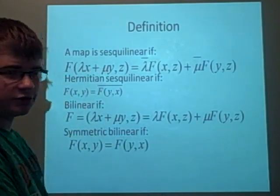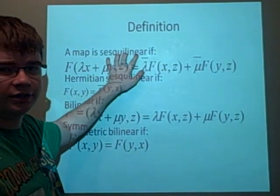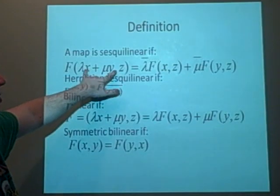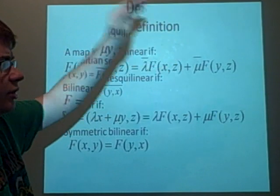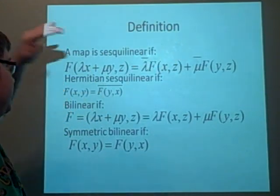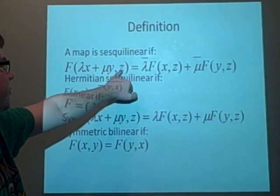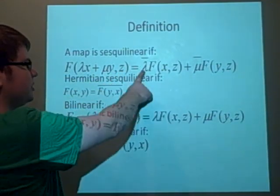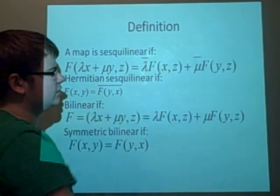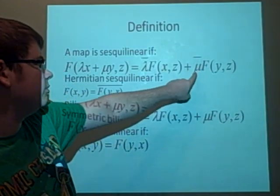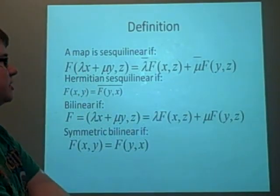Right, there's just four different definitions we should know. A map is sesquilinear if you can use this function here, so we have a map f of x and it will take us to some function. And if we can do lambda x plus mu y and then z, if this is equal to the complex conjugate of lambda f of x and z plus mu complex conjugate f of yz, then that's sesquilinear.